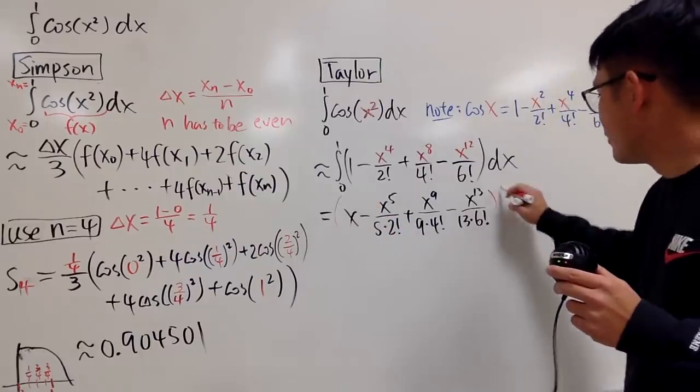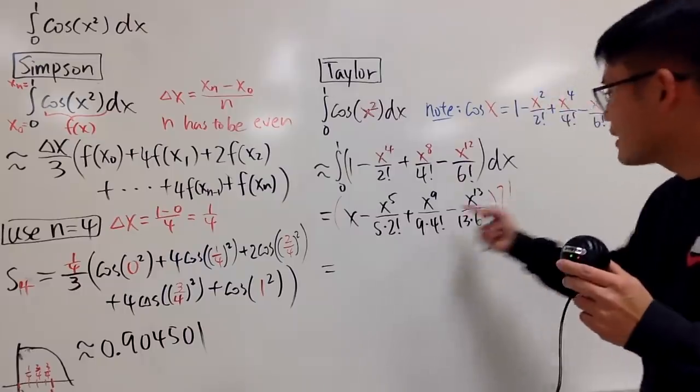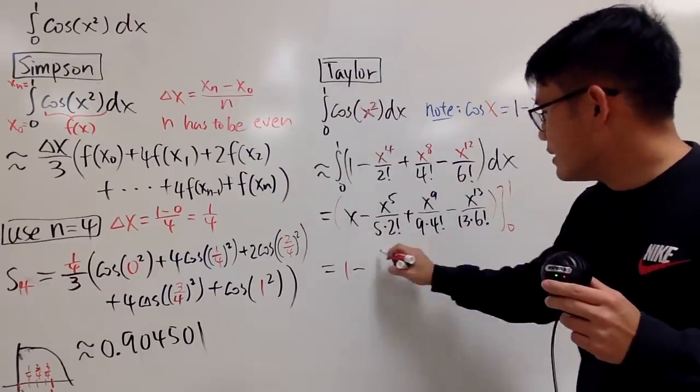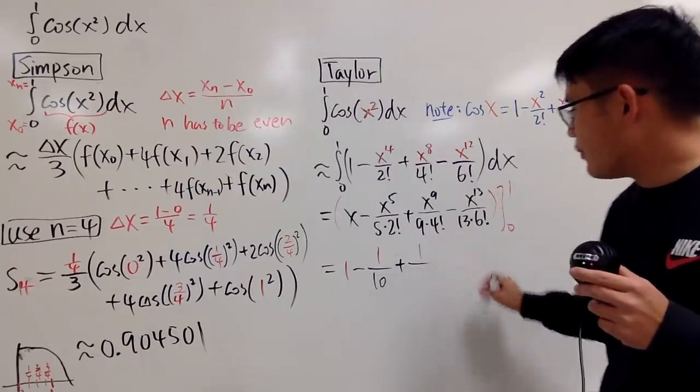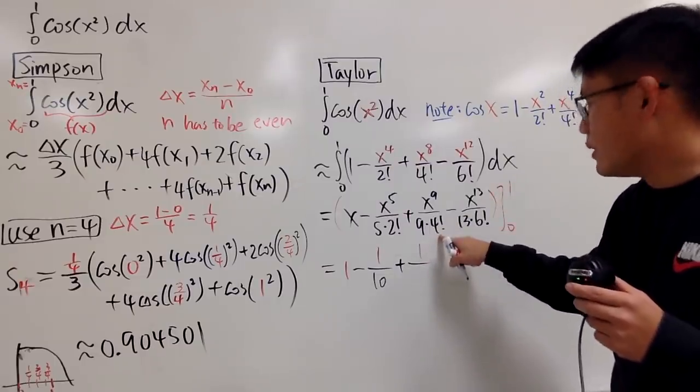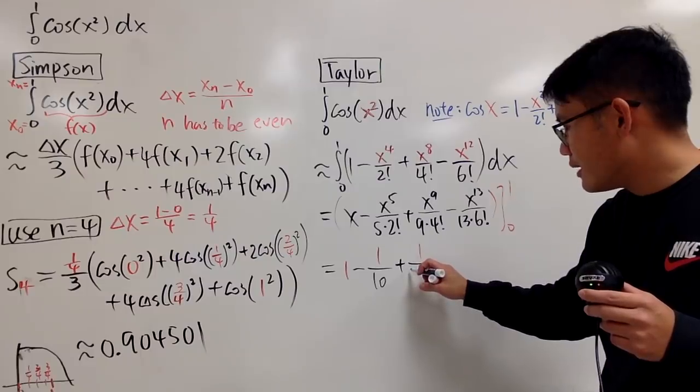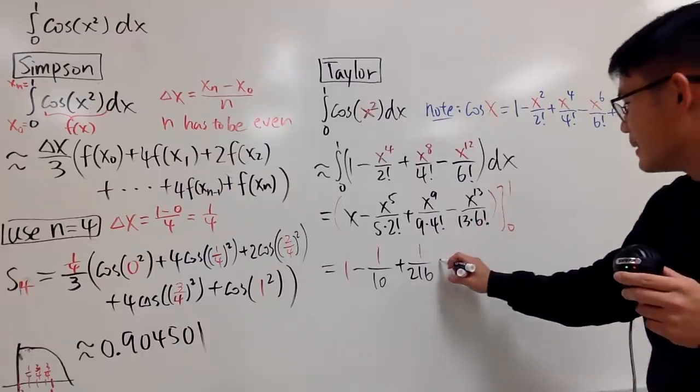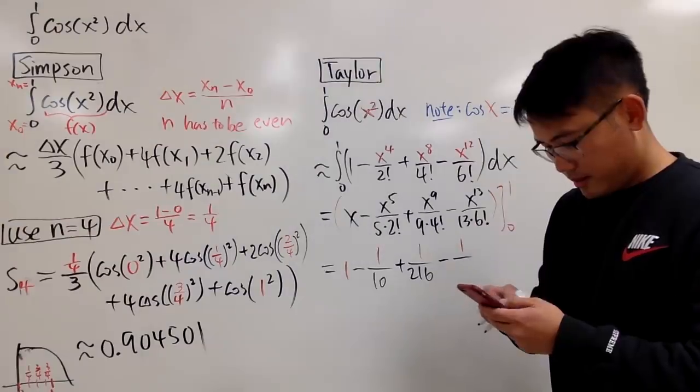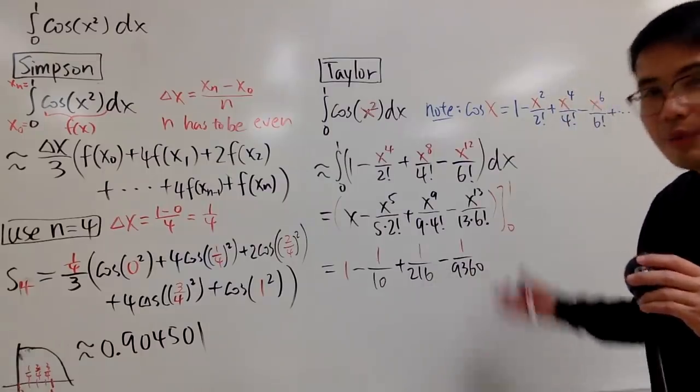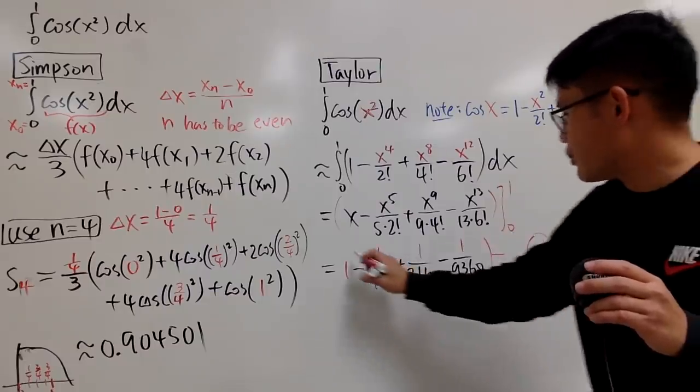Oh my god, life is so easy when we have Taylor to back us up. Don't forget, we go from 0 to 1. When you plug in 1, it's just 1, then minus, this is just 1, and multiply this out, 5 times 2 is 10. Then you add, put in 1 so it's 1, then over, this is 4 times 3 times 2 which is 24 times 9 which is 216. Then this is minus, on the top it's 1, over 13 times 720, so 9,360. We're done, because if you plug in 0, everybody has an x, so you're just minus 0. So this is pretty much the idea.